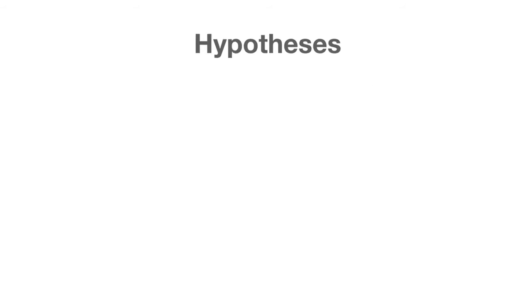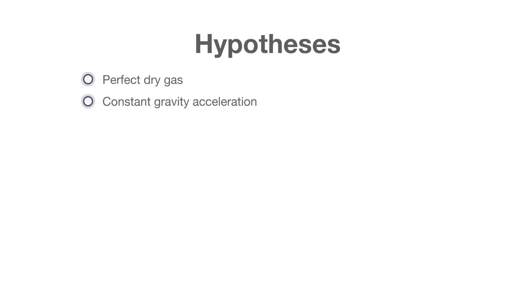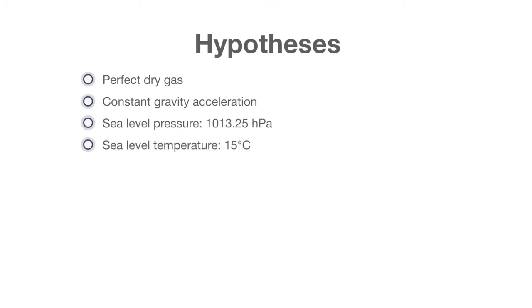What are the layers of the atmosphere? The atmosphere can be divided into layers based on temperature. The layers are the troposphere, the stratosphere, the mesosphere, and the thermosphere. A further region beginning about 500 km above the Earth's surface is called the exosphere.